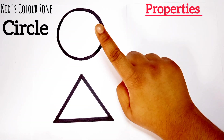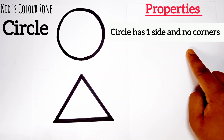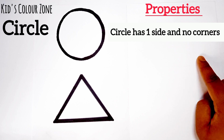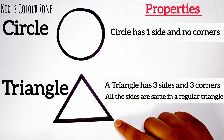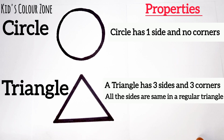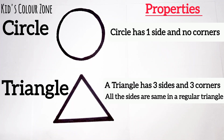This is a circle. A circle has one side and no corners. This is a triangle. A triangle has 3 sides and 3 corners. All the sides are the same.